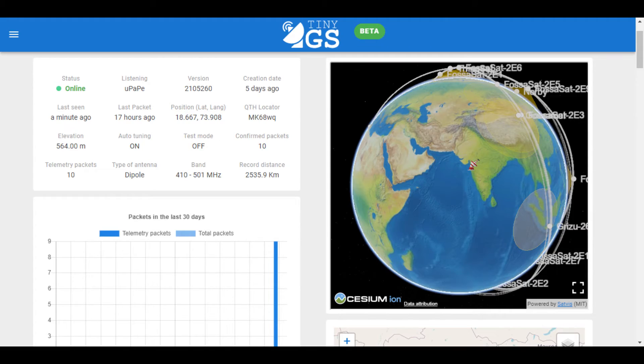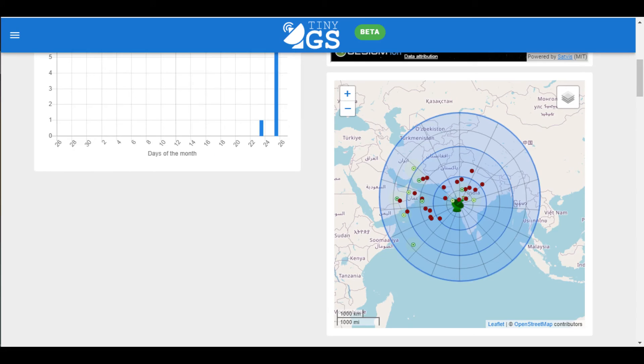So this is the dashboard of my TinyGS ground station and you can see the confirmed packets as well as the record distance from here and you can also see the graphical representation of the satellite positions from which the packets have been received.